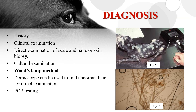Diagnosis can be done by proper history taking and clinical examination of the animal, by direct examination of scales and hairs or skin biopsy — which are the only two diagnostic tests that can confirm invasion of the skin or hair follicles. Fungal culture can determine whether spores are present on the hair coat and must be used in conjunction with clinical examination findings. The Wood's lamp method can be used to find abnormal hairs for direct examination. PCR testing confirms the presence or absence of fungal DNA on the hair coat. Figure 1 shows detection of dermatophytosis using the Wood's lamp method, and Figure 2 shows direct examination of M. canis infected hair.